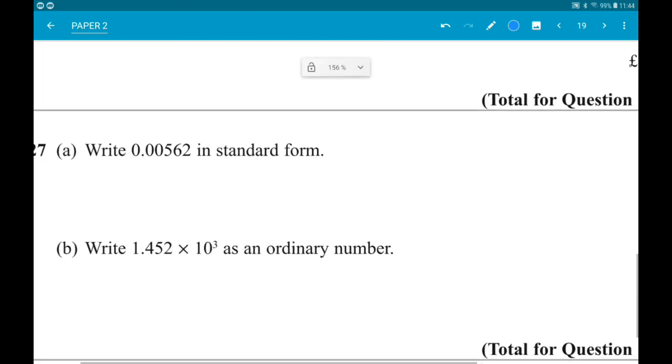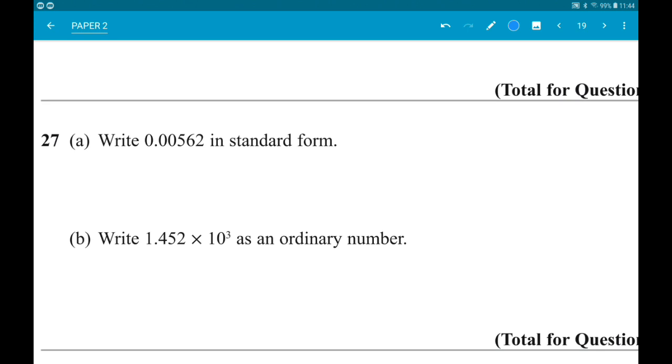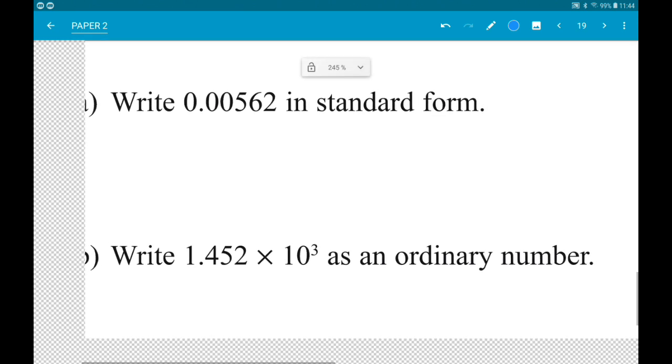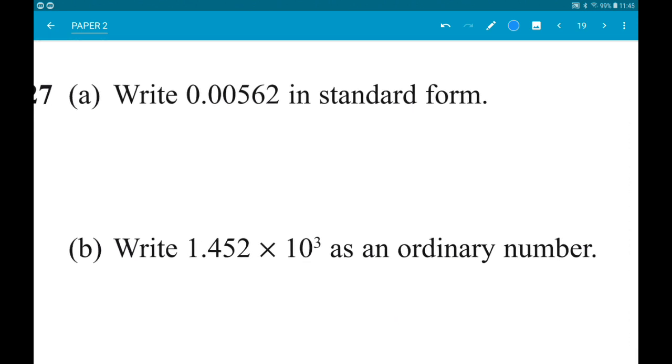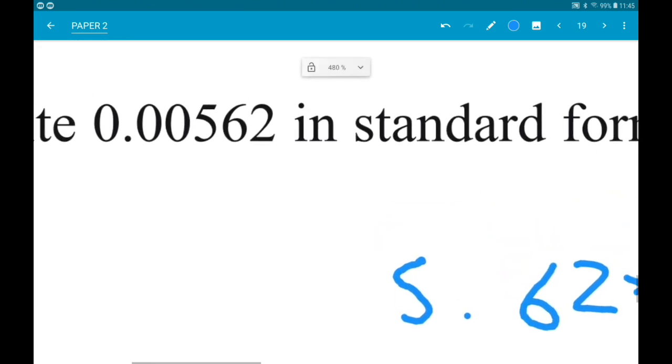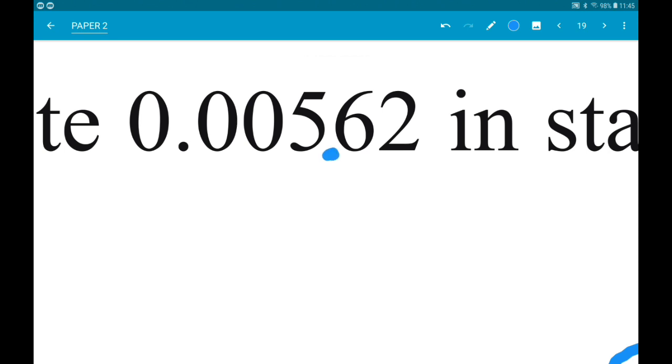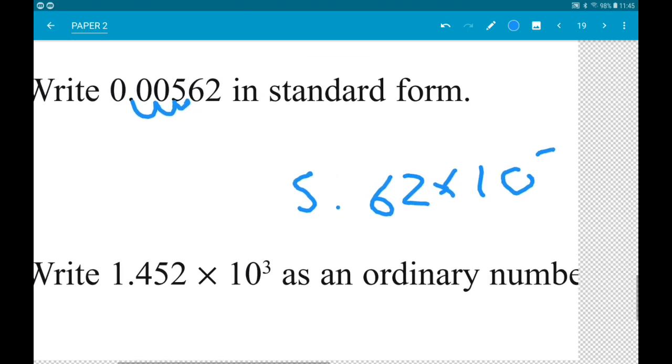Number 27: Write 0.00562 in standard form. Standard form is always a single digit, so here it's 5.62 times 10 to a power. Because the number is less than 1, we need a negative power. To work out the number, count how many places the decimal moves: 1, 2, 3. So it's 10 to the minus 3.